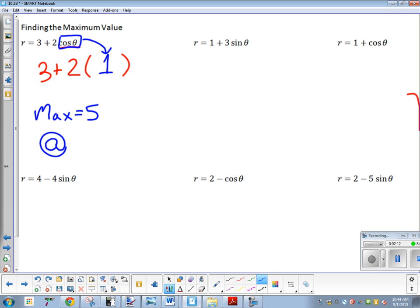So what am I looking for for cosine? The x, and I want to know when the x value is one. Where does that occur? Zero. There's my x value right there. At zero degrees, my x value is one. So my maximum is five at zero degrees.